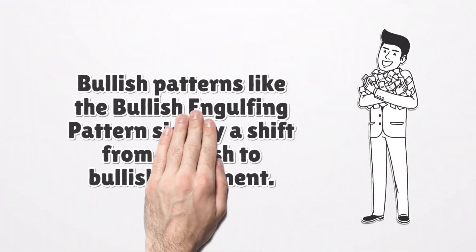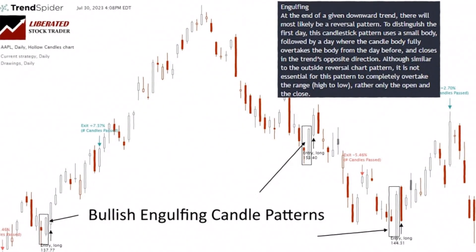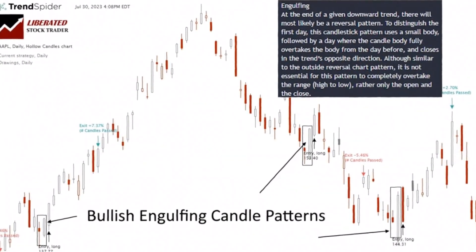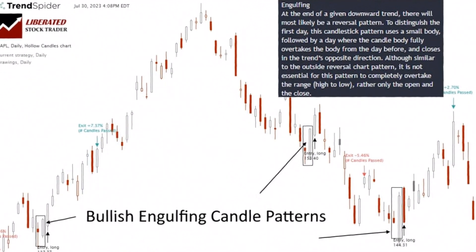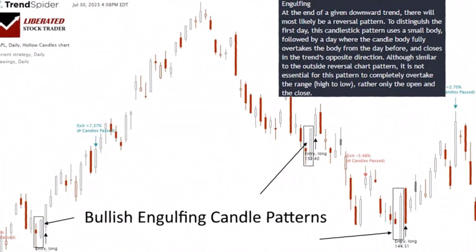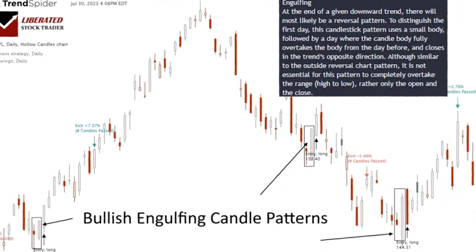Bullish patterns like the bullish engulfing pattern signify a shift from bearish to bullish sentiment. The bullish engulfing pattern occurs when a small red bearish body is followed by a larger green bullish body that engulfs the prior red body, signifying a strong switch in sentiment from sellers to buyers.